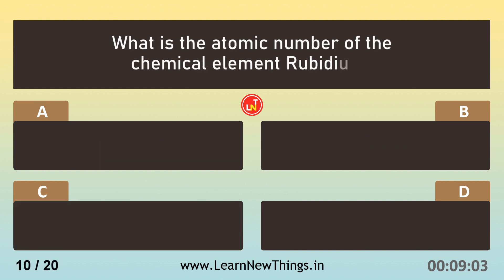What is the atomic number of the chemical element rubidium? Thirty-seven.